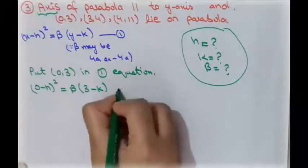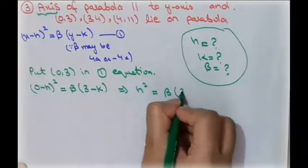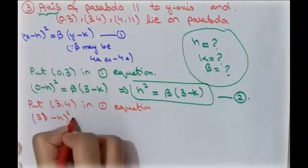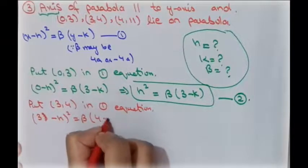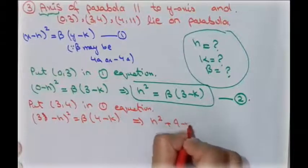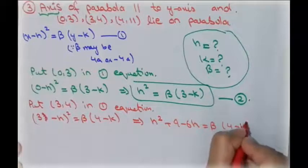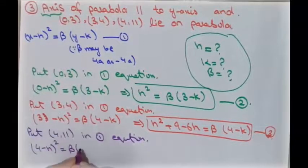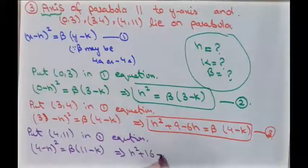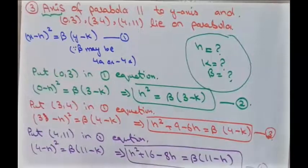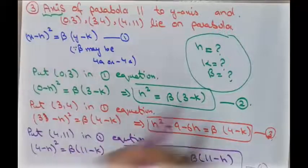Substituting the first point (x = 0, y = 3): (0 - h)² = beta(3 - k), giving h² = beta(3 - k) — second equation. For the second point (x = 3, y = 4): (3 - h)² = beta(4 - k), expanding to h² + 9 - 6h = beta(4 - k) — third equation. For the third point (x = 4, y = 11): (4 - h)² = beta(11 - k), giving h² + 16 - 8h = beta(11 - k) — fourth equation.